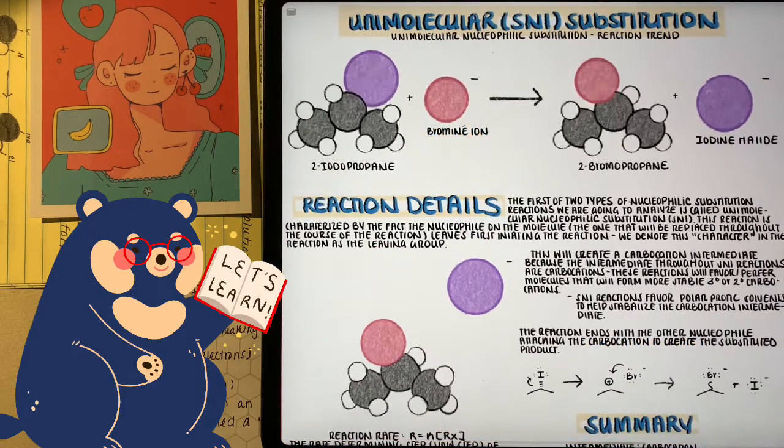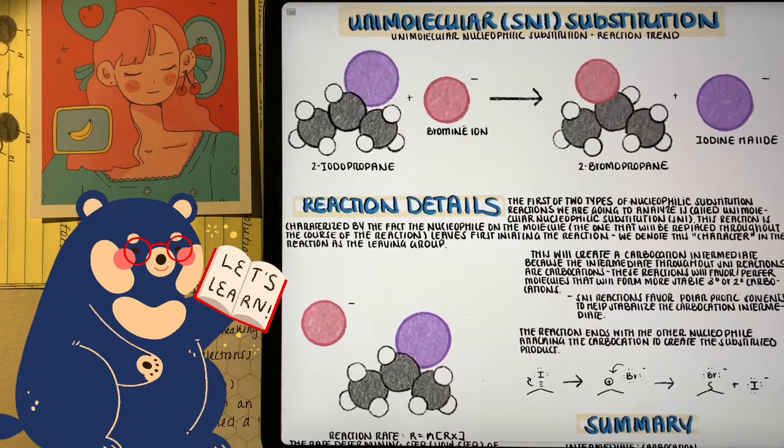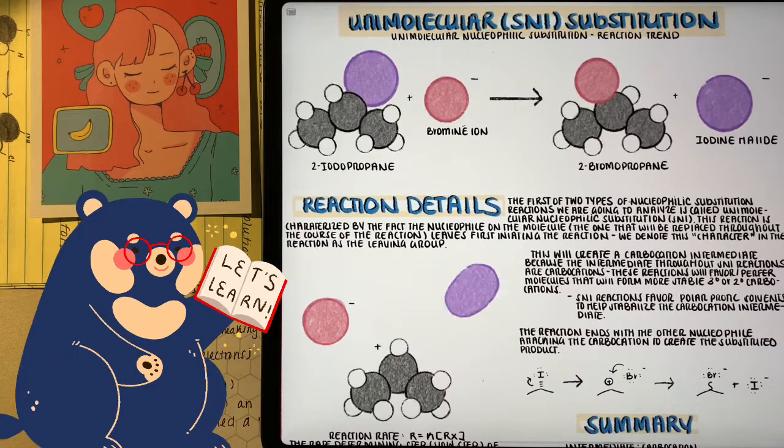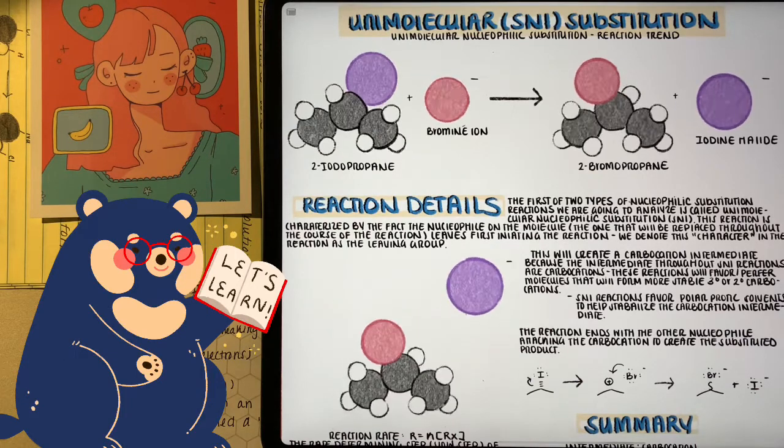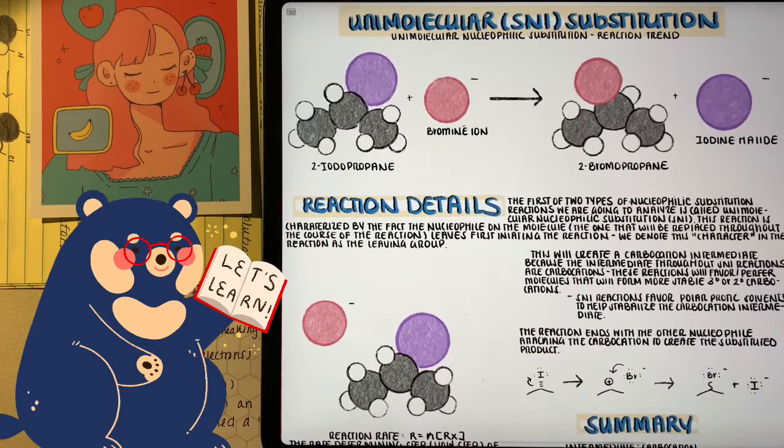Since this reaction is so dependent on the leaving group leaving, one of the most beneficial things of this reaction, besides the fact of desiring a tertiary or secondary carbocation formation, is having a really good leaving group. Iodine here is a really good leaving group because of its atomic size, it can handle its negative charge.